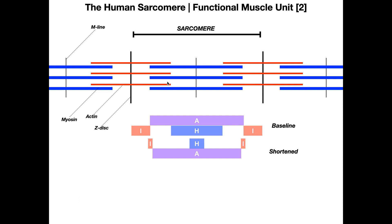Remember that myosin is the enzymatic protein with ATPase activity — it's the one that moves. Myosin is going to pull actin toward the midline. This actin on the right side gets pulled toward the M-line to the right, and this actin on the left side gets pulled toward the M-line on the left. That happens at every single sarcomere, giving you a net shortening of the muscle that is visible macroscopically.